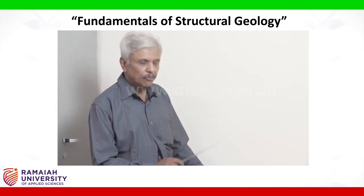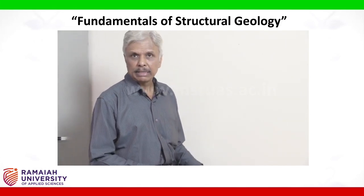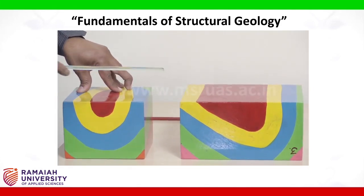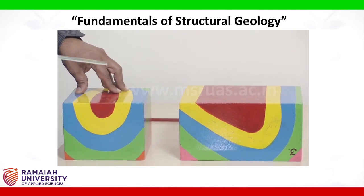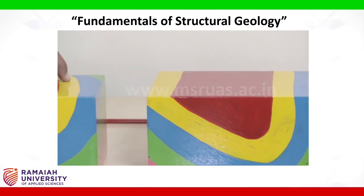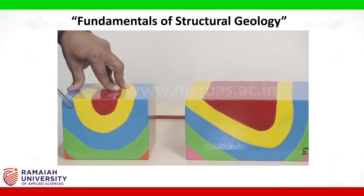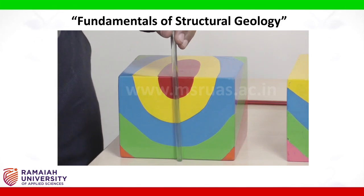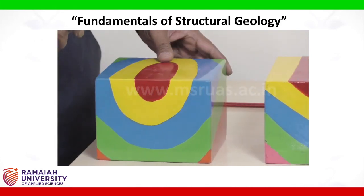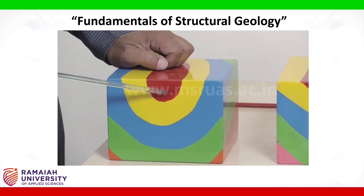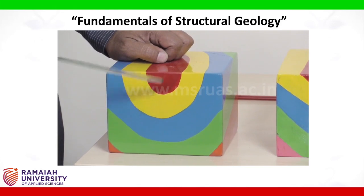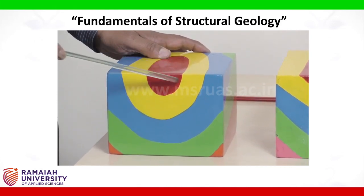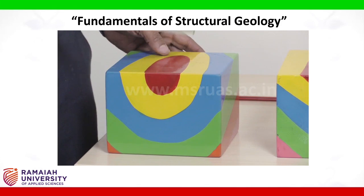The other type of fold is the synclinal fold. Synclinal fold is a U-shaped fold, in contrast to the anticlinal fold which is arching type. This is a symmetrical syncline, because the limbs dip towards each other in a symmetrical fashion with reference to the axis of the fold. In a synclinal structure, the youngest rock type is always at the trough. The youngest rock is always at the trough of the synclinal structure.